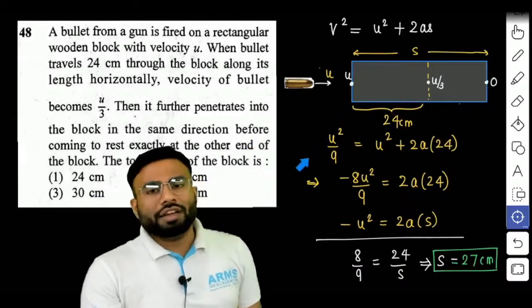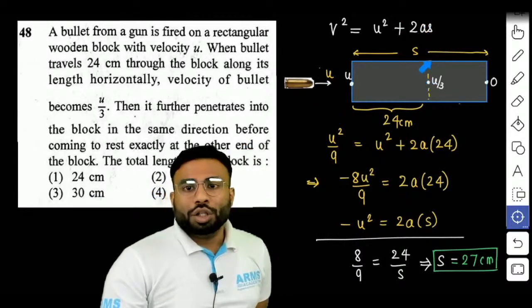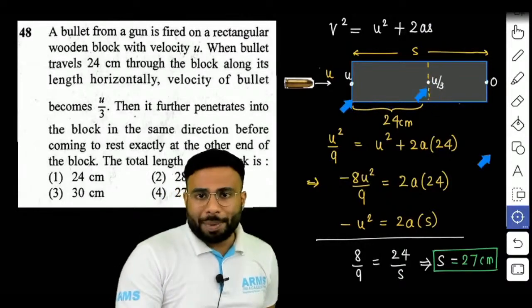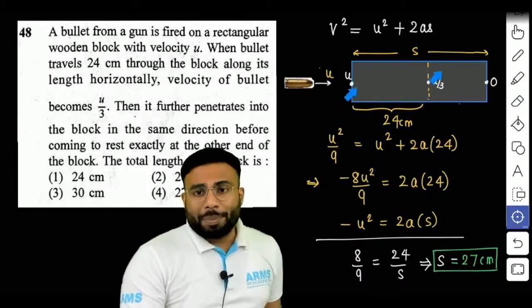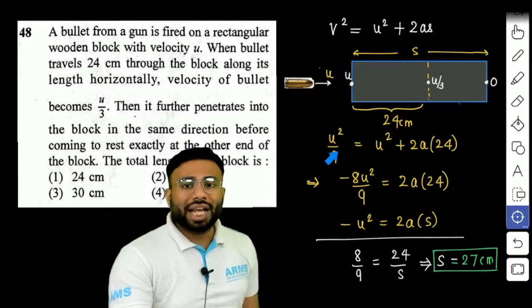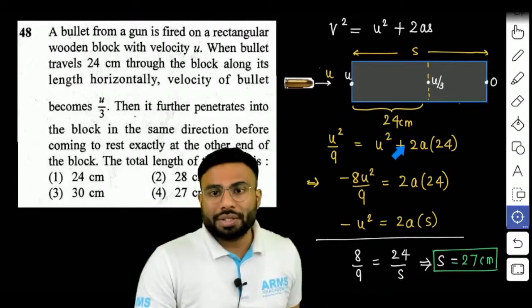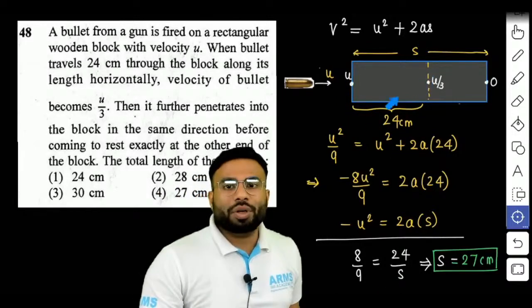तो हम simple equation लगा दे, V square is equal to U square plus 2AS. V is final velocity, यह पार के लगा दे तो यह पार के लगा दे, final velocity is U by 3, उसका square U square by 9, initial speed U, U square U square plus 2AS हम लोग ले लेते है